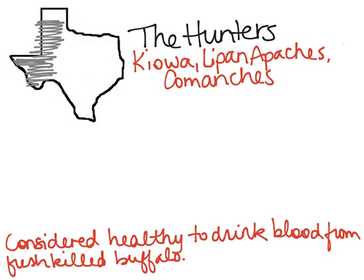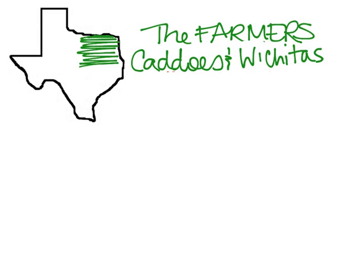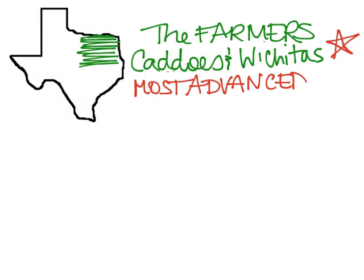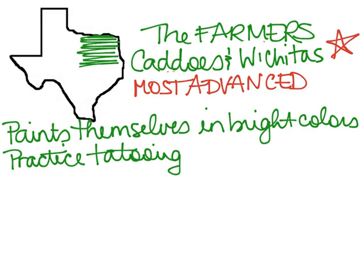Our next group are the farmers, who live in the northeastern part of Texas — the Caddos and the Wichitas. Put a star in your notes here because this group is the most important group to know. They are the most advanced group. This group paints themselves in bright colors and decorates themselves with shells, bones, animal teeth, seeds, and feathers.